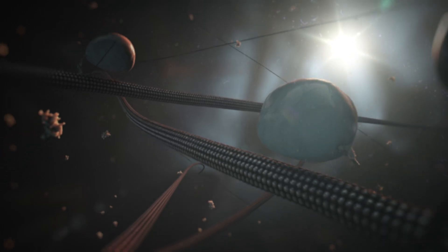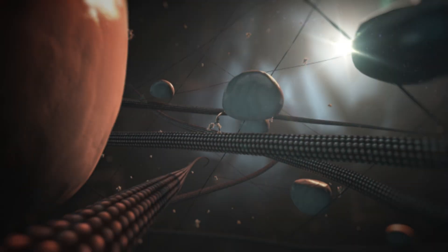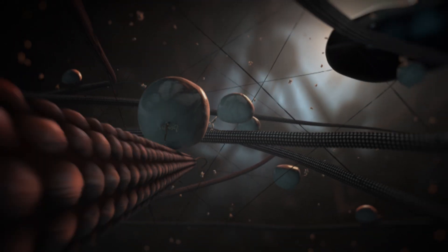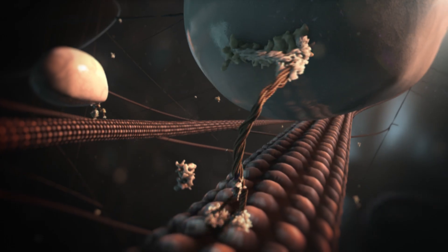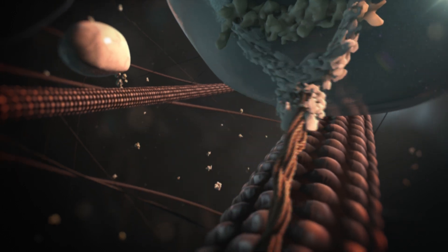Two types of motor protein, kinesins and dynein, transport cargoes along microtubules. Adaptor proteins help to couple the correct cargo with the right motor protein.